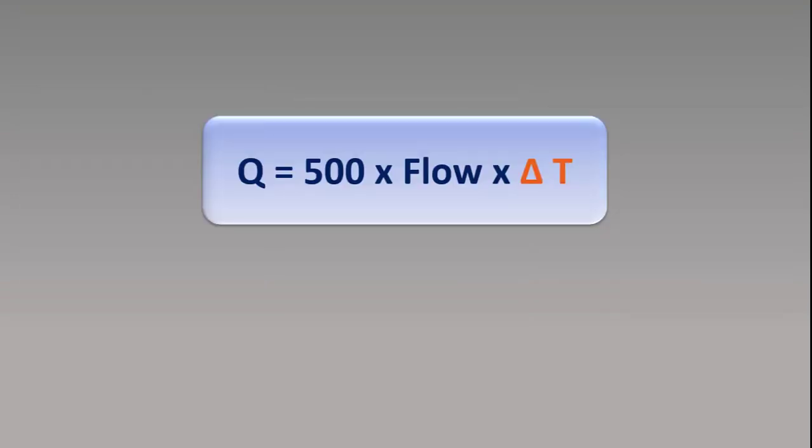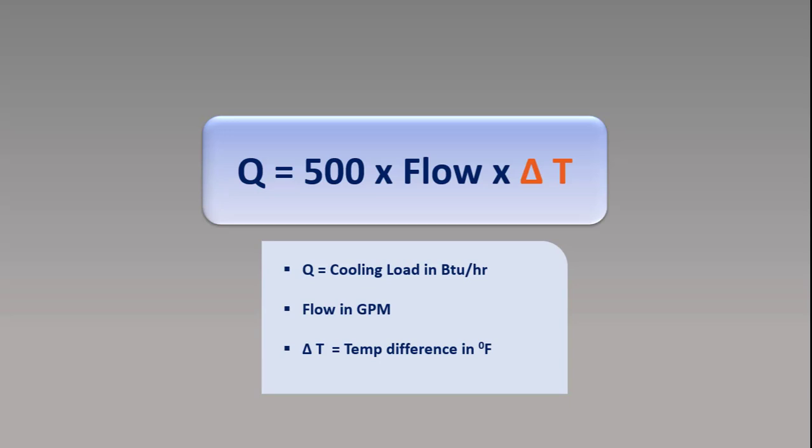Before discussing the constant flow primary chilled water system, let's briefly look at the load formula for cooling load. Here Q is the cooling load in BTU per hour, flow is the water flow in GPM, and delta T is the temperature difference between the supply and return temperature in Fahrenheit. In a constant flow chilled water system, flow is always constant, so the delta T will change with the change in the load.